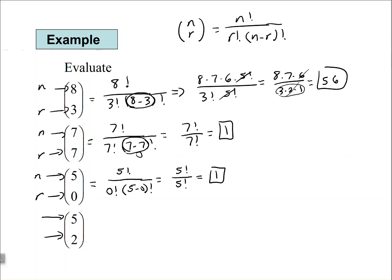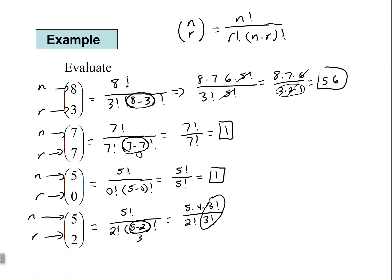Let's try one more: 5 above 2. We have 5 factorial over 2 factorial times (5 minus 2) factorial. Since 5 minus 2 is 3, let's break the 5 factorial down as 5 times 4 times 3 factorial, so the 3 factorials cancel. That leaves 5 times 4 in the numerator and 2 times 1 in the denominator. Since 2 goes into 4 twice, we get 5 times 2, which equals 10.